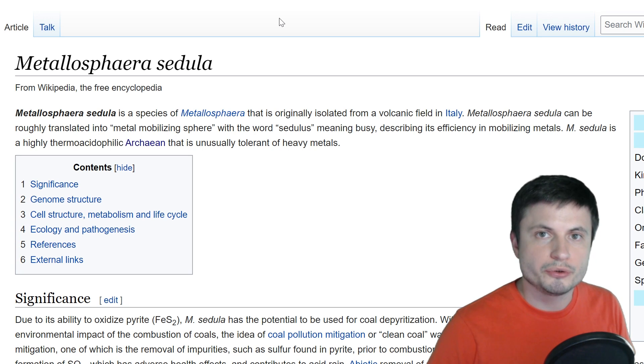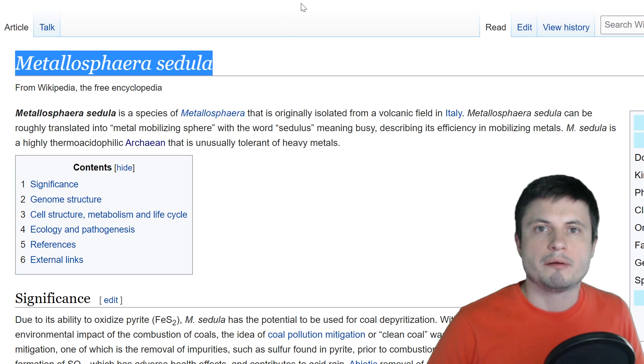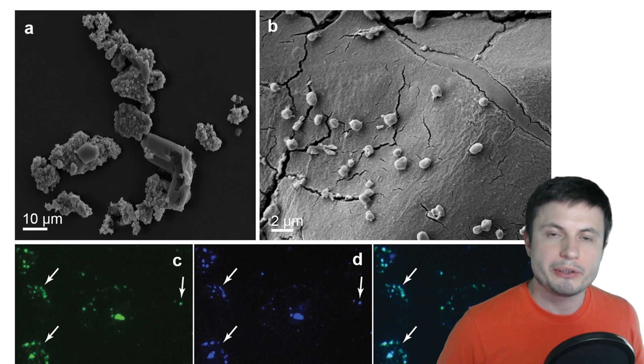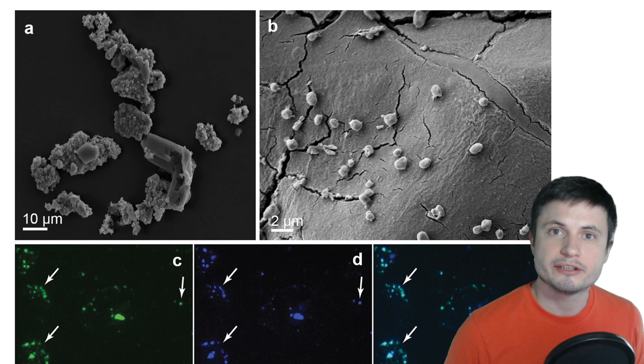When it comes to bacteria types there is quite a lot of diversity on our planet. Essentially most of the life here are the bacteria. But the bacteria that we're talking about today is Metallospheracidula. As the name implies, it has something to do with metals. And more specifically, these unusual bacteria have a tendency to thrive in very toxic to humans environment. More specifically in acidic and extreme environments similar to those found in the Yellowstone National Park. So essentially it's what's known as an extremophile.